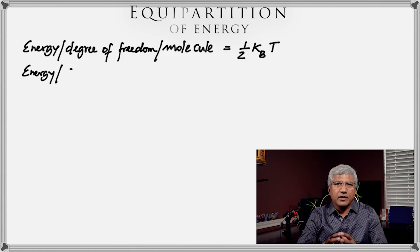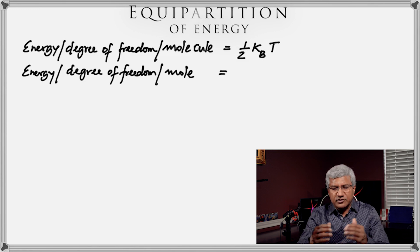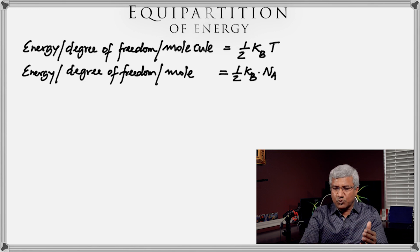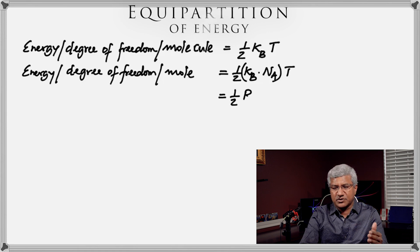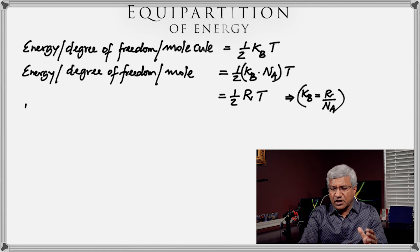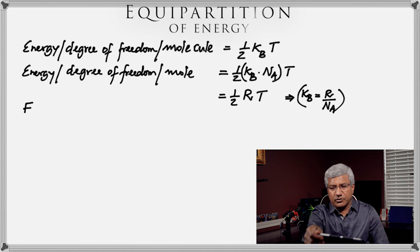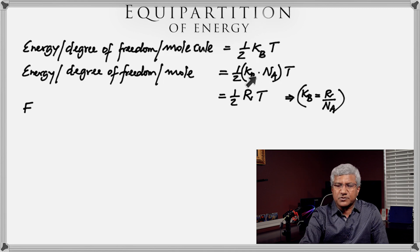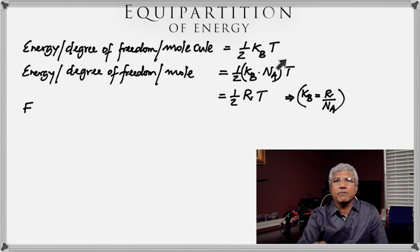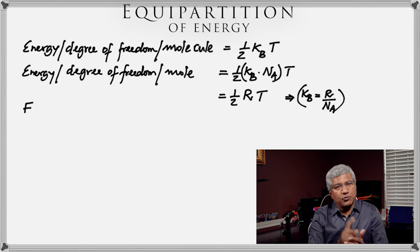Since we have defined the energy of one molecule, we can easily define the energy of one mole, because there is the Avogadro number of molecules in one mole. The energy per degree of freedom per mole is ½kB × NA × T, which equals ½RT, because Boltzmann's constant is the ratio of the universal gas constant R to the Avogadro number NA. So the NA's cancel and we get ½RT — the energy of one degree of freedom for one mole.